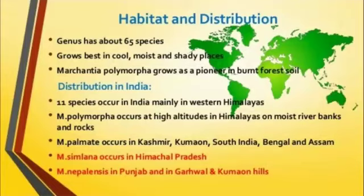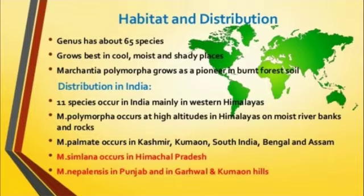Marchantia polymorpha occurs in the area from the Himalayas, including Kalmata, Kashmir, Kumahan, South India, Bengal and Assam region. In the Himalayas, species such as Marchantia nepalensis, Punjab, Cargol, and Kumans species are also found.